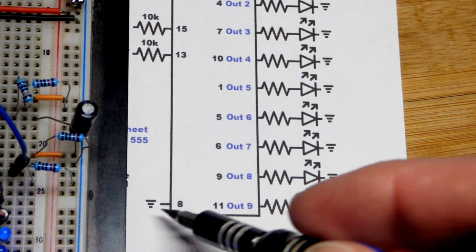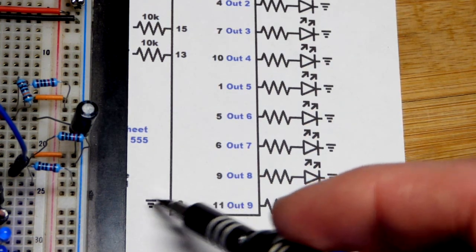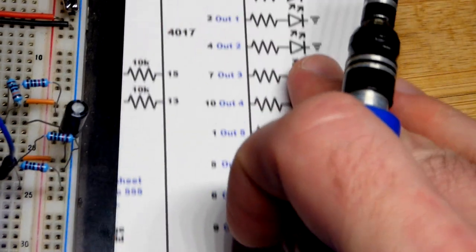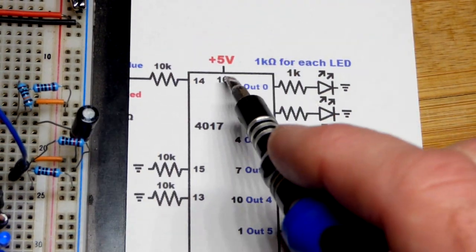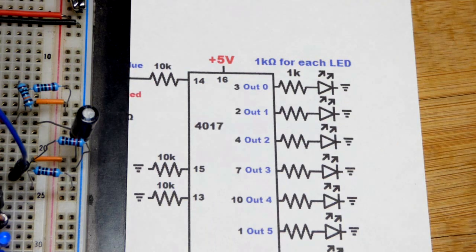We have also pin eight here. That is a supply pin. You may not see that on the schematic. But we are using five volts to power this circuit. Pin 16 is to the positive supply, five volts, just like the 555 timer is five volts.